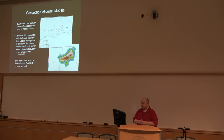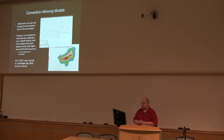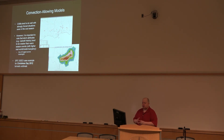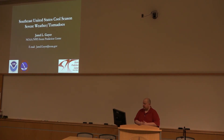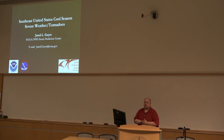So if you're looking at your favorite convection-allowing model, you might have associations with UH above 100 or above 75 in strong CAPE scenarios. But in the cool season, we've actually seen many cases where tornadoes are roughly correlated with UH of 25 or greater. That's just one final comment in terms of applying this information to more modern datasets and tools. With that, I'll wrap up and say thank you.